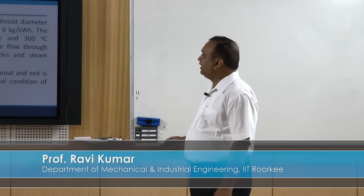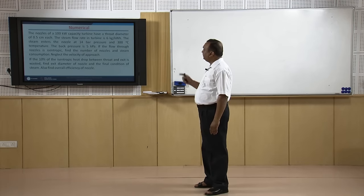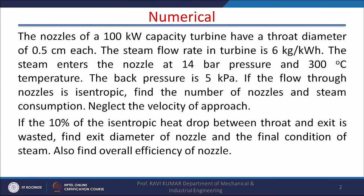The statement of the numerical: the nozzles of a 100 kilowatt capacity turbine — meaning there are a number of nozzles, not a single nozzle — have a throat diameter of 0.5 centimeter each. The steam flow rate in the turbine is 6 kg per kilowatt hour. The steam enters the nozzle at 40 bar pressure and 300 degree centigrade temperature.